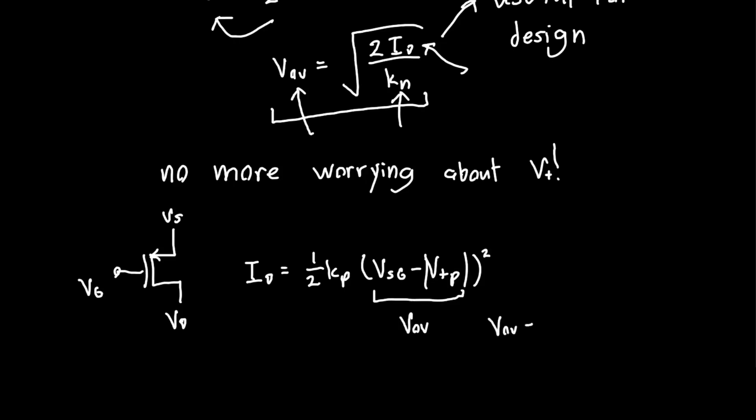So for a PMOS, the overdrive voltage is Vsg minus the magnitude of the threshold voltage. And that gives us the same exact equation, one half Kp times VOV squared, as we had for the NMOS. So it's an incredibly elegant way of relating currents and voltages in MOSFETs.